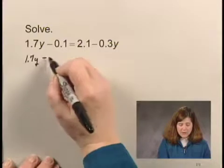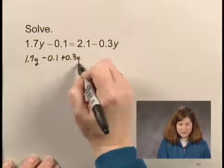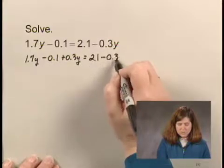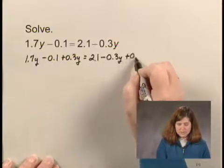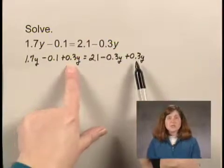That would look like this: 1.7y minus 0.1 plus 0.3y equals 2.1 minus 0.3y plus 0.3y. And I've added it here and here on both sides of the equation.